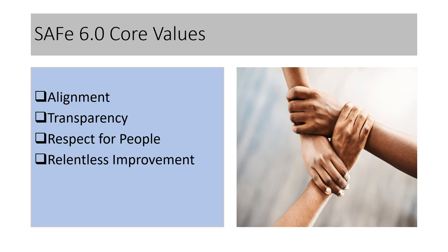Now let's understand the new core values. These are the four updated core values where alignment and transparency are still there, but SAFe has introduced two new core values. One is respect for people — we need to build teams and create an environment where there is trust, collaboration, and respect. Ultimately, whatever product we are trying to build is built by the people, so we need to create the right environment with trust, openness, transparency, and mutual collaboration within the team as well as with other teams.